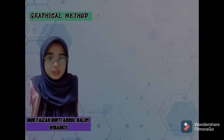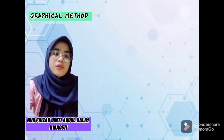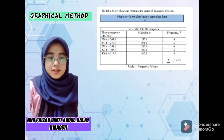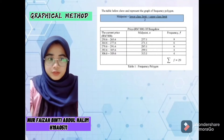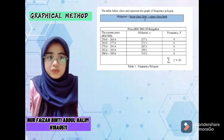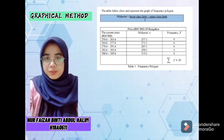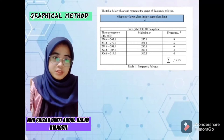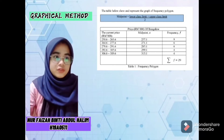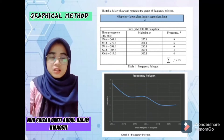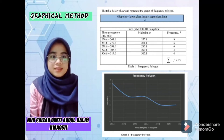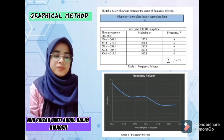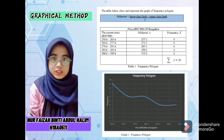The graphical methods used in this report are two: frequency polygon table and graph, and histogram table and graph. Frequency polygon table and graph is a graphical device for understanding the shapes of distributions. They serve the same purpose as histograms, but are especially helpful for comparing sets of data. Frequency polygons are also good for displaying cumulative frequency distributions.